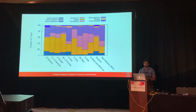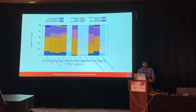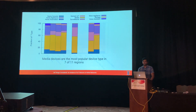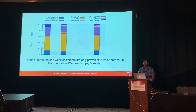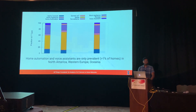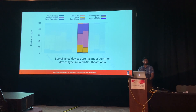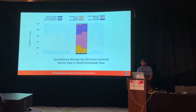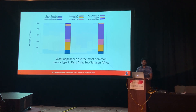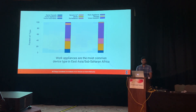Looking at this device type distribution globally, you can start to tease out similarities and differences. Media devices are not just the most popular device type in North America — they are the most popular in 7 out of 11 regions in our dataset. Home automation devices and voice assistants are only prevalent (meaning in more than 1% of homes) in North America, Western Europe, and Oceania. In South and Southeast Asia, surveillance devices are very popular, making up 54% of all devices in South Asia. Work appliances are the most common device type in East Asia and Sub-Saharan Africa, making up more than 50% of devices in Sub-Saharan Africa.